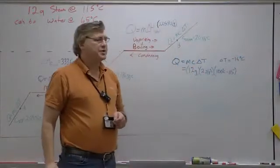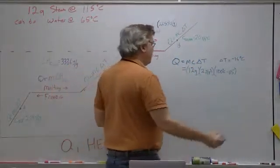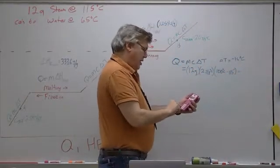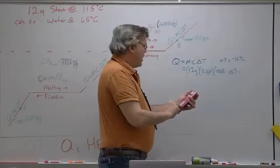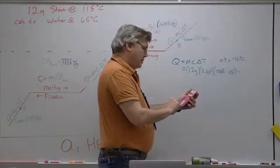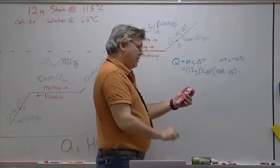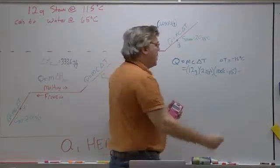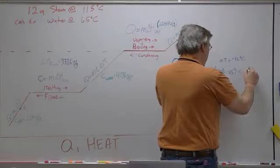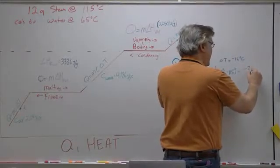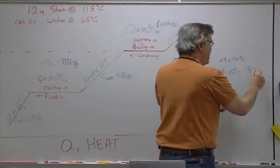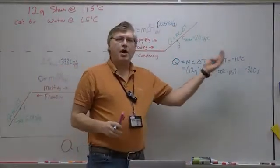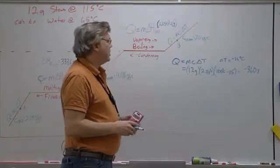So if we plug that into the calculator, I have 12 times 2 times a minus 15. You can do times 15 and then just change the sign. So that's how much heat is required to come off of the steam in order for it to condense.